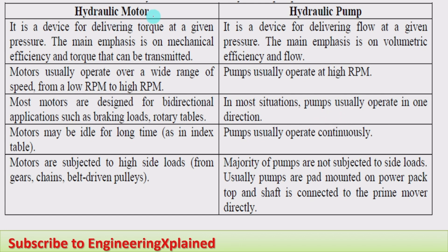What is meant by hydraulic motor? It is called a hydraulic rotor and it is an output device which produces the output power required for the various operations of the hydraulic system. The hydraulic pump, on the other hand, is an input power source — it provides the fluid power to the hydraulic system for its working.